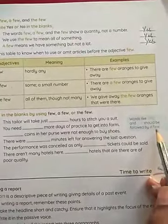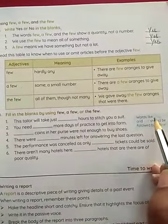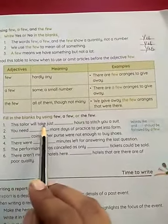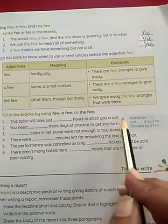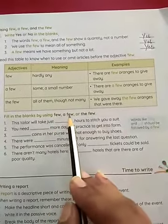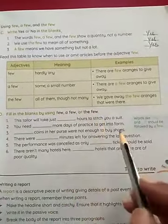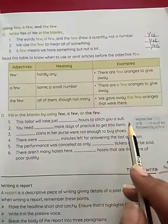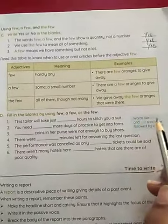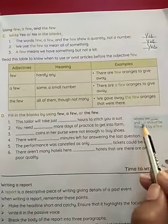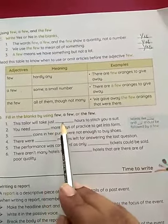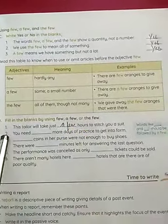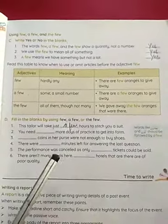They have given a hint: for using 'a few,' words like 'only' and 'just' — if they are there, you can write 'a few.' So for example: the tailor will take just [blank] hours to stitch you a suit. Since the word 'just' is there, what word do we use? It's 'a few.' Now understood? The next five questions are left — you have to write them in your course book itself.